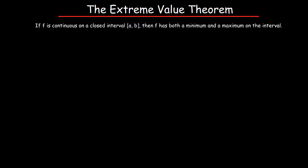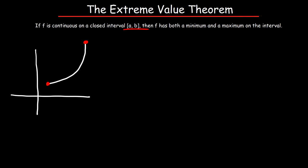In this video we're going to focus on the Extreme Value Theorem. It says that if f is continuous on a closed interval a to b, then the function f has both a minimum and a maximum on the interval. Let's illustrate it — if we have some graph with a curve, both endpoints are included because it has to be a closed interval. The first point is a, the second point is b.